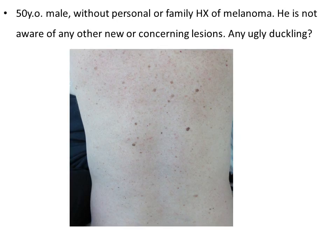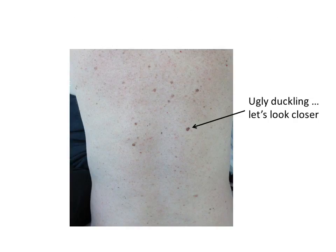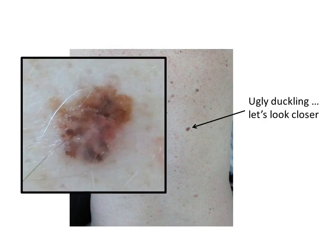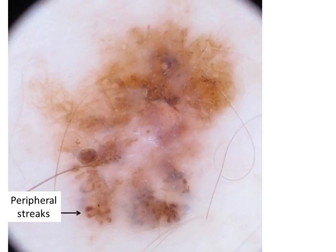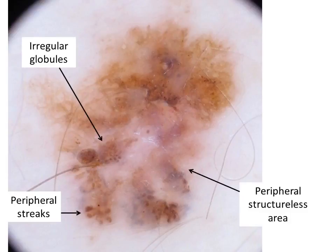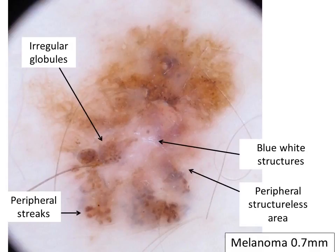Here's an example. This 50-year-old has no history of melanoma. On full body examination, an ugly duckling was seen. Looking closely, we see obvious asymmetry and color variegation with multiple colors asymmetrically distributed. With dermoscopy, this becomes much more obvious. There is irregular distribution of colors and structures — structures that are concerning for melanoma including peripheral streaks, irregular globules, structural areas, and blue-white veil. The melanoma is 0.7 mm in thickness.